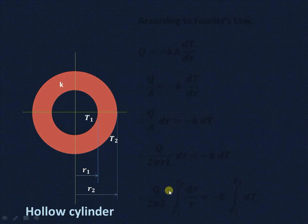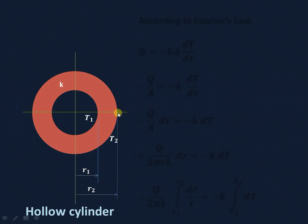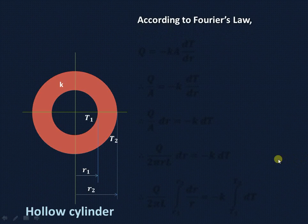Let us try to understand how to find out the thermal resistance in case of the hollow cylinder as shown. At radius R1 the temperature is T1 and at radius R2 the temperature is T2, so these are the boundary conditions. Now, according to Fourier's law in case of the cylindrical coordinate system, the heat flow rate